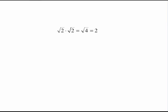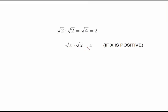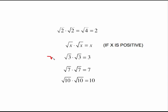Something that can make these problems easier: the square root of 2 times the square root of 2 is the square root of 4, which is 2. When you multiply square root of x times square root of x, it just gives you the number under the radical sign, as long as x is positive. So square root of 3 times square root of 3 is just 3; square root of 7 times square root of 7 is just 7; square root of 10 times square root of 10 is just 10. This is a time saver that will help with the rest of these FOIL problems.